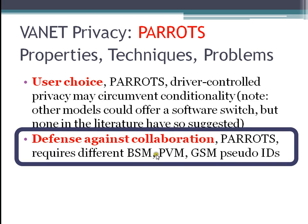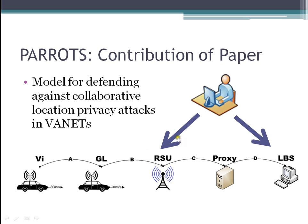The purpose of this presentation is to talk about defense against collaborative attacks, where two types of attackers are collaborating — a local and a global attacker, for example. This PARROTS model addresses that problem, but it does require different pseudo-IDs at different levels. For example, the BSM would have to have a different pseudo-ID from the PVM for this to work; otherwise the antennas could correlate them. The contribution of this paper is that if you have a collaborative attack — someone who can control the local antennas and also a location-based service — the PARROTS model defends against that type of attack.